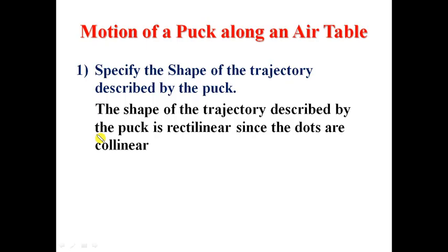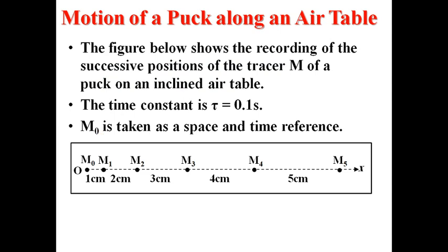Now, the position. The position of each dot. The position, mathematically, is the abscissa of the dot. M0 is at the origin. It has x equals to 0. Now, x1, the abscissa of M1 is 1 cm. This 1 cm is the distance separating M0 and M1. This 2 cm is the distance separating M1 and M2, and so on. Remember that the abscissa or the position is taken relative to the origin.